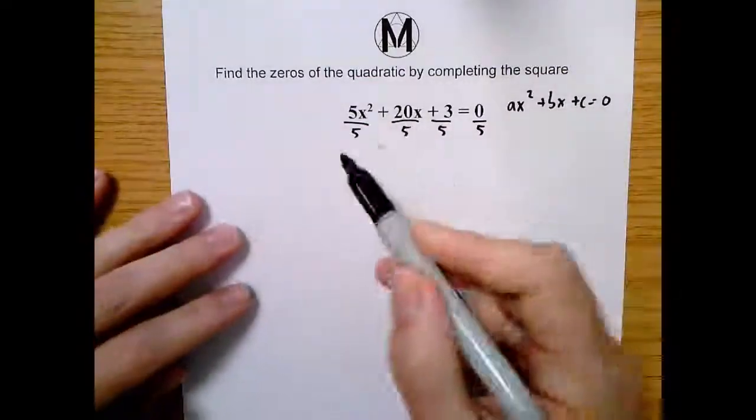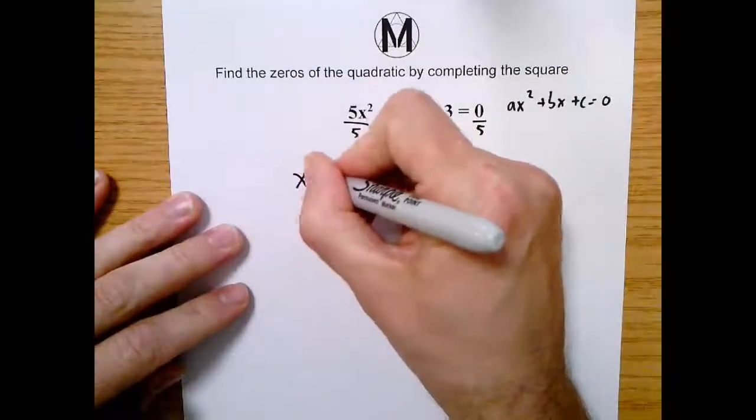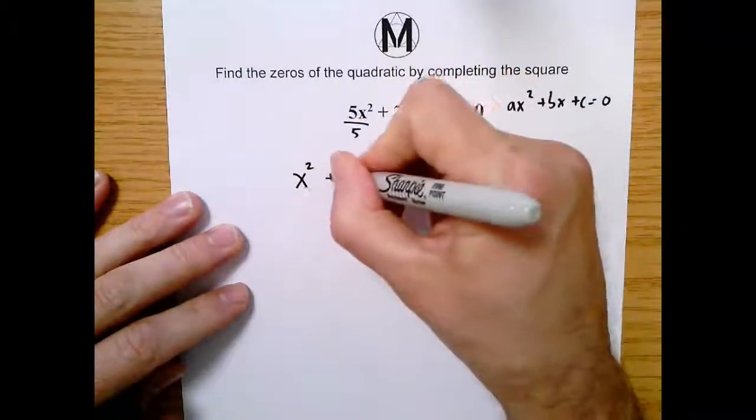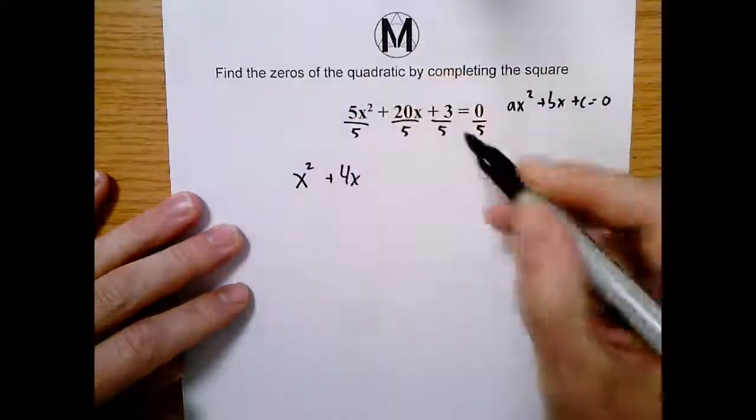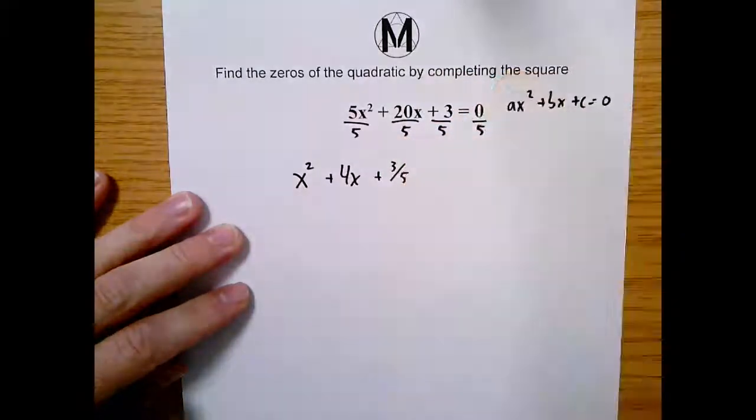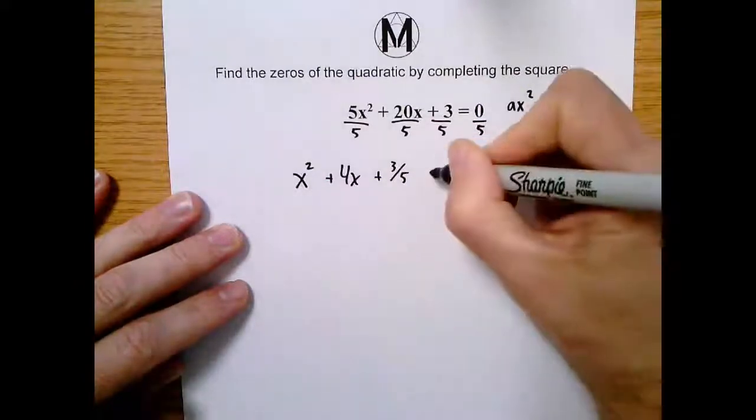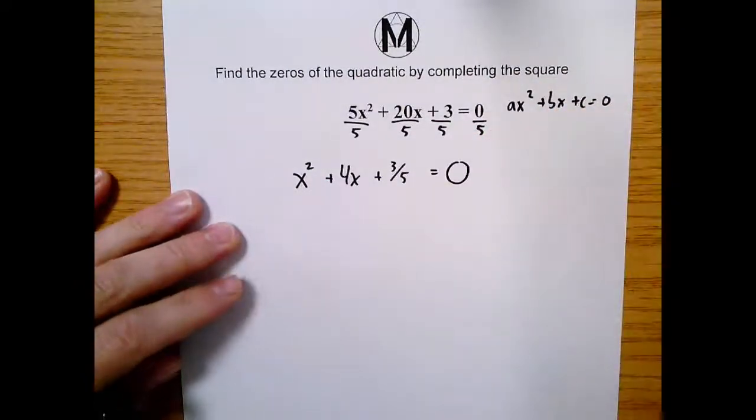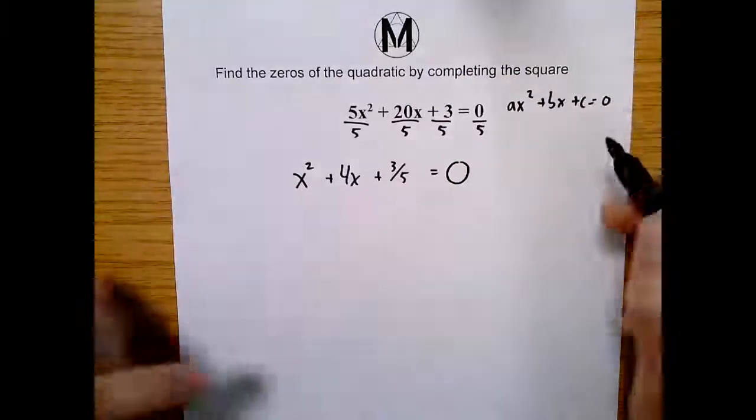So what we actually do is just divide every term in the equation, even the zero, by five. When we do that, five divided by five is one, so we rewrite it as x squared. 20x divided by five is four x, plus four x, and then this will be three fifths, right? Three fifths equals zero divided by five, which is zero.